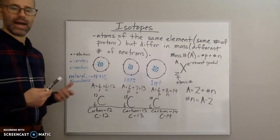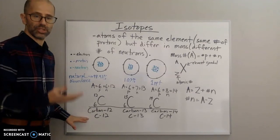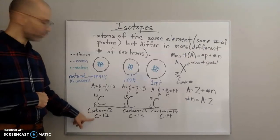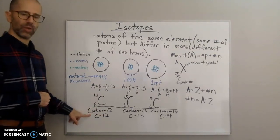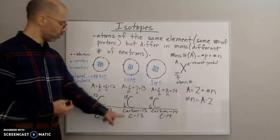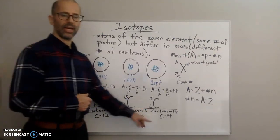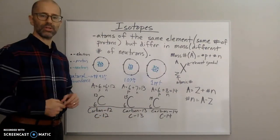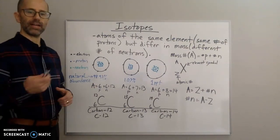Another notation is the element name or symbol followed by a dash and the mass number. So these are called carbon-12 or C-12, carbon-13 or C-13, and carbon-14 or C-14. The number after the dash is always the mass number, equal to the number of protons plus neutrons.